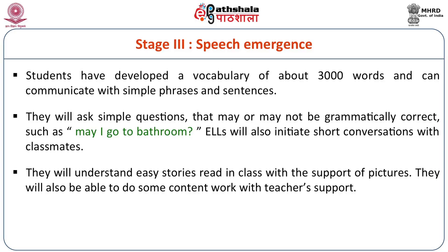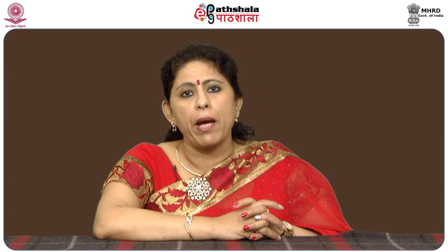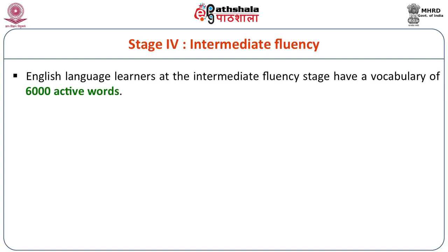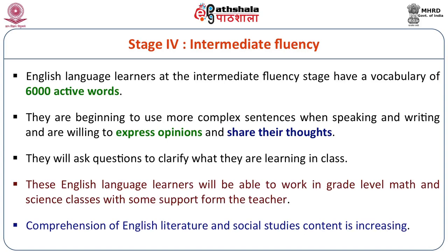Stage four is intermediate fluency. Whenever we judge any speaker, we judge on the parameter of fluency — how fluent the speaker is. English language learners at the intermediate fluency stage have a vocabulary of 6,000 active words. They are beginning to use more complex sentences when speaking and writing and are willing to express opinions and share their thoughts. They ask questions to clarify what they are learning, they have doubts, they try, they fail, and then they are ready to clear those doubts and move ahead toward proper fluency.